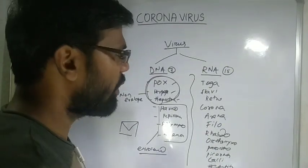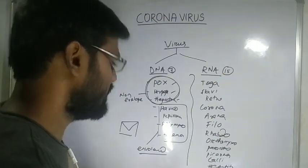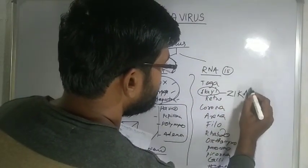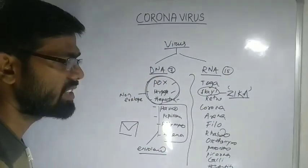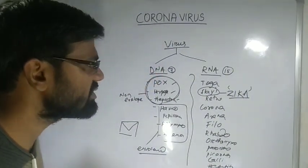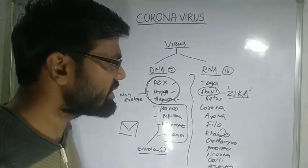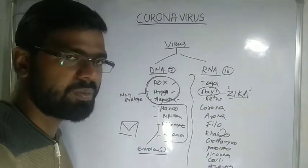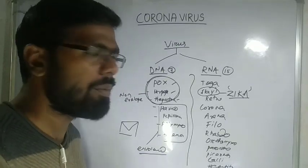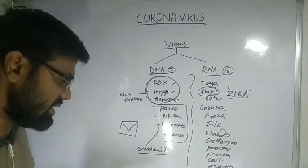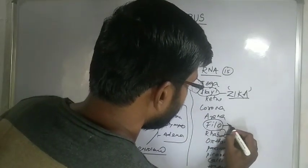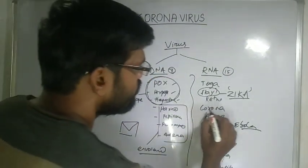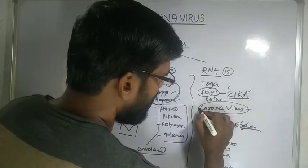Out of all these viruses, the one gaining significant public health importance nowadays is flavivirus, which causes Zika virus disease. Zika causes microcephalic conditions in babies and has been shown to cause transplacental infections, meaning it can transmit from mother to offspring via the placenta. Another important one is filovirus, which causes Ebola.